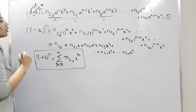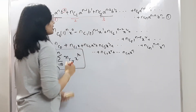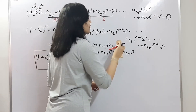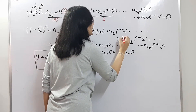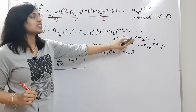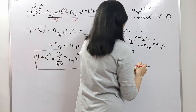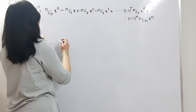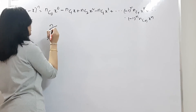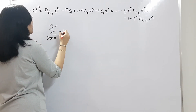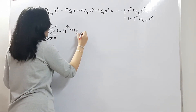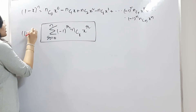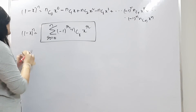In the same way, for (1-x)^n, the only thing that changes is the sign — x becomes -x. We alternate the signs based on the value of r. Since we don't know r, we write (-1)^r to handle whether the term is positive or negative. So (1-x)^n = Σ (r=0 to n) (-1)^r · nCr · x^r.